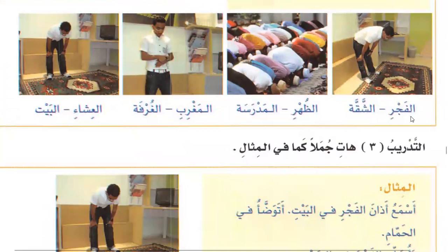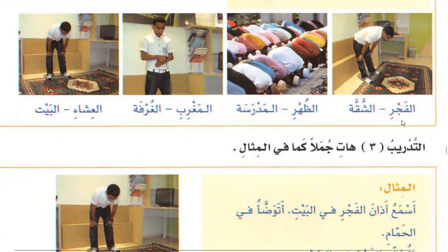The first person will say 'this is the azaan of Fajr.' The second person will say 'let's pray in the mosque' or 'pray in the mosque.' Then the first person will say 'I pray in the apartment,' and the second person will say 'pray in the mosque.'